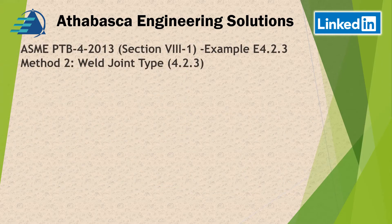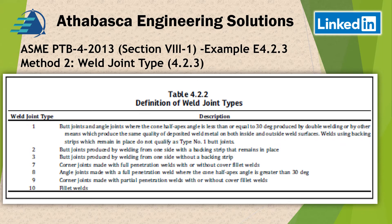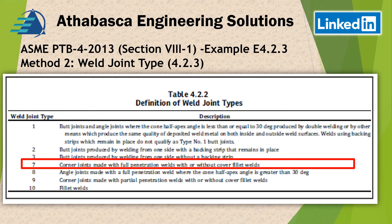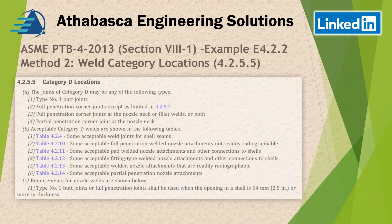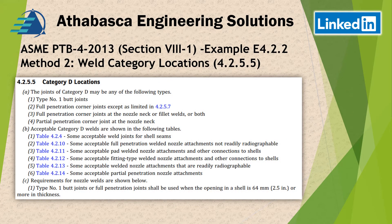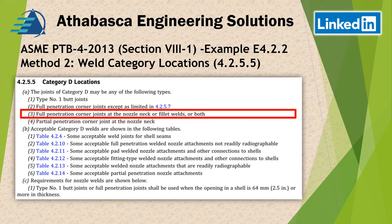In our case we use full penetration welds — that's probably the most common approach in Division 2 work. We have full penetration corner welds at the nozzle neck. We follow the subcategory of D and then look down that list for acceptable weld pad nozzle attachments and other connections to shells. This is a recommended list where all the rules are covered. Method 2 is all about designed by rules, and this tells us which chart to use with very specific details.